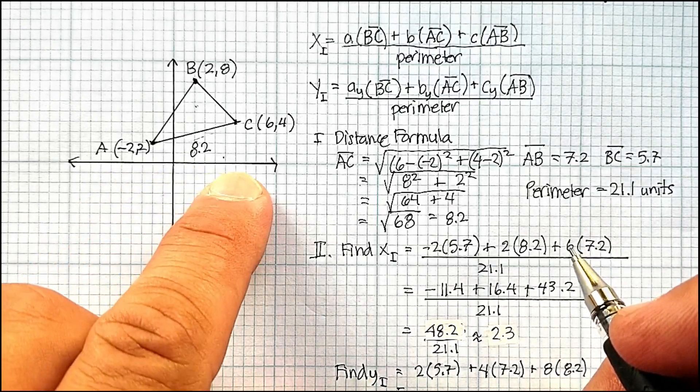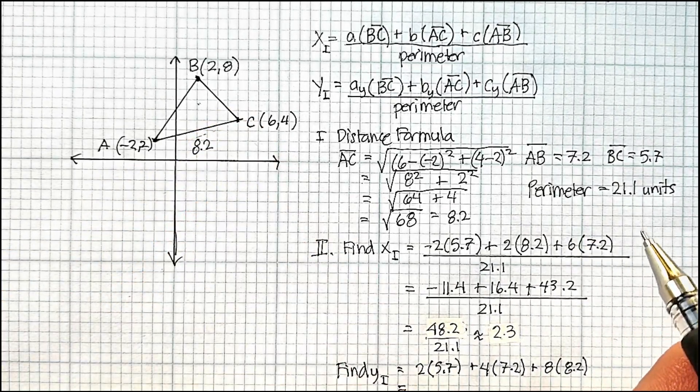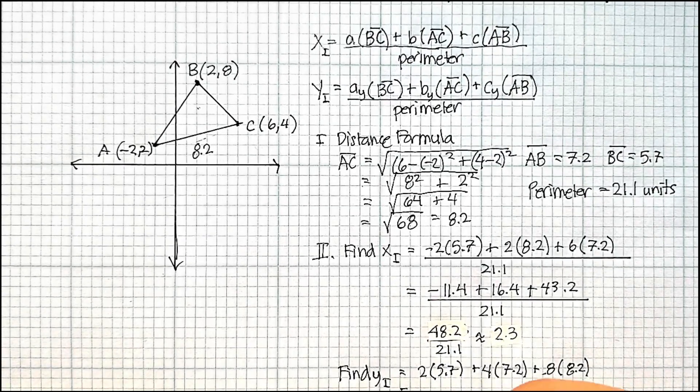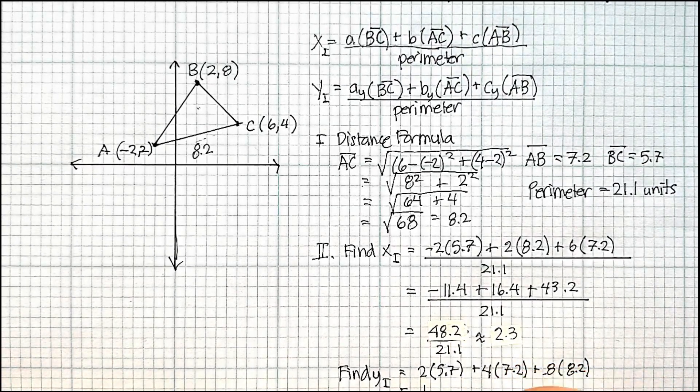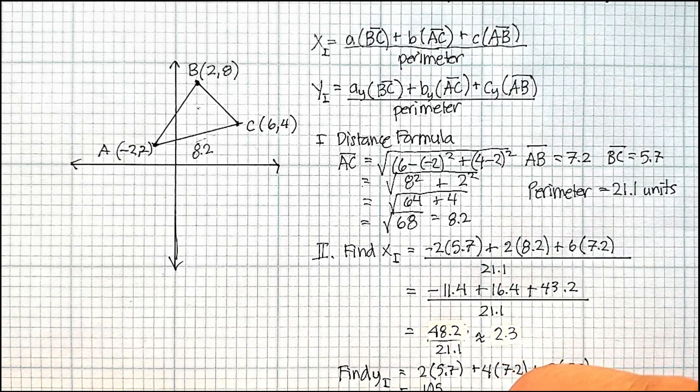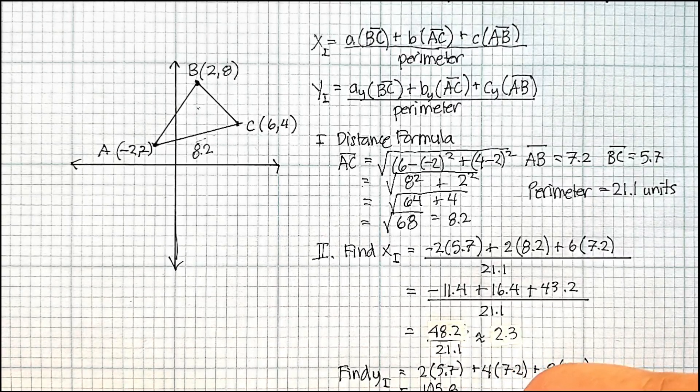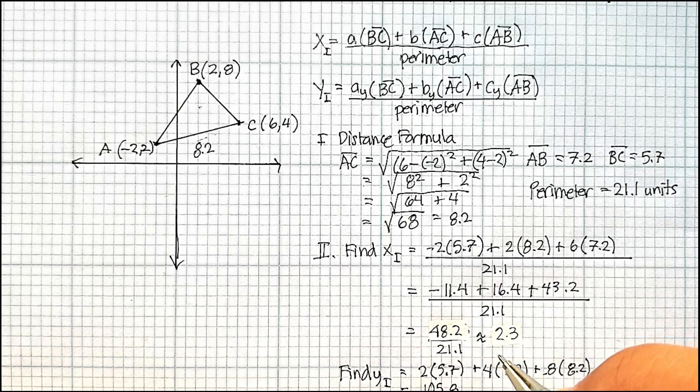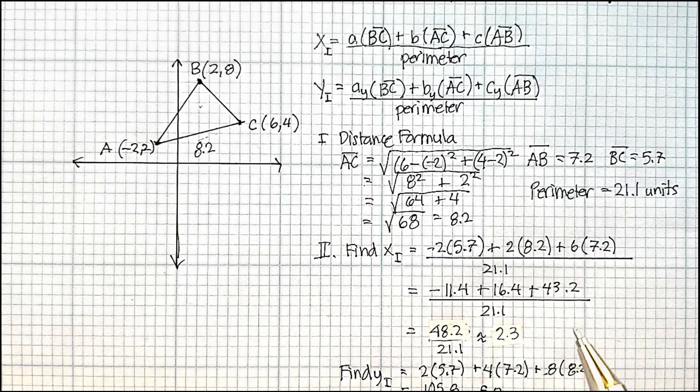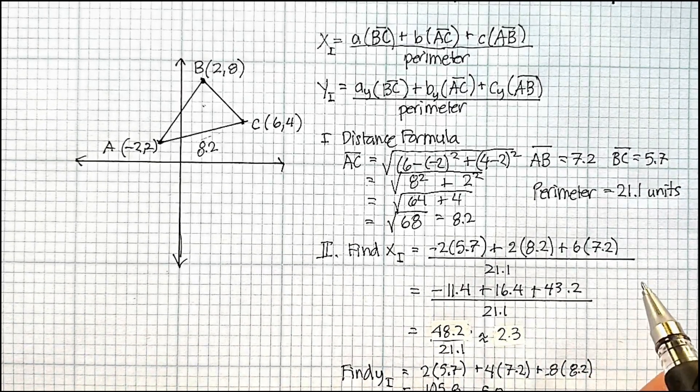When I add all these up, I'm going to get 105.8 divided by 21.1, and that's going to give me approximately 5.0. So my incenter, according to my calculations and my formula, is going to be at 2.3 and 5.0.